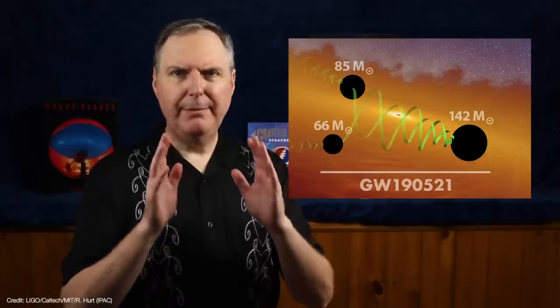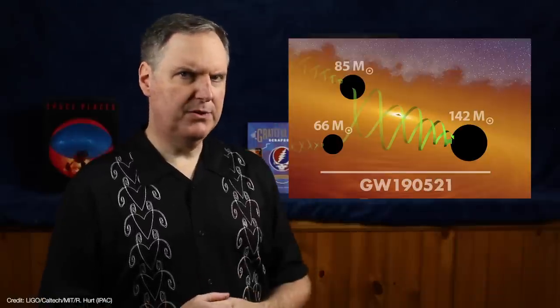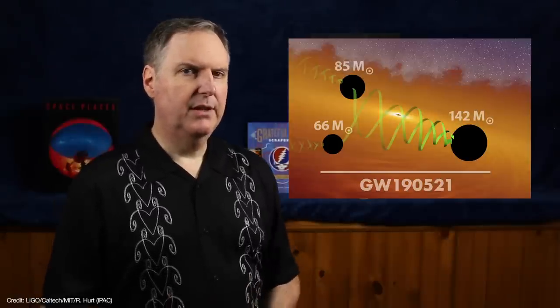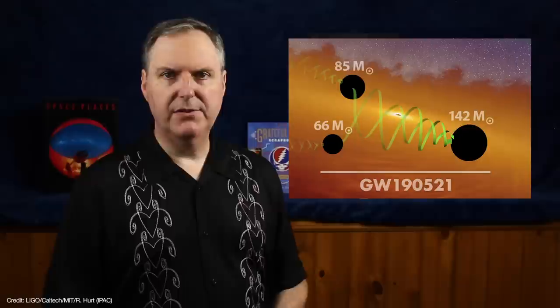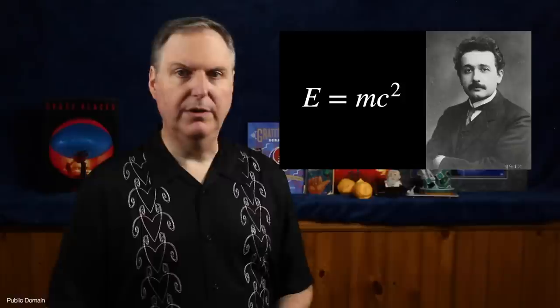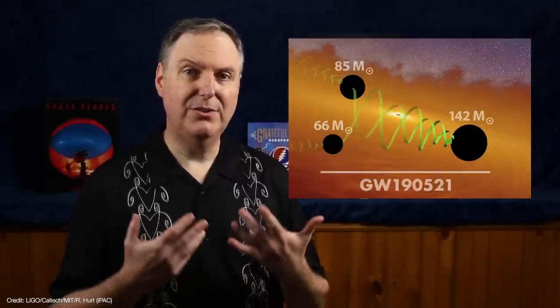Now, if I'm doing my math correctly, 85 and 66 solar masses add up to 151 solar masses. But the resulting black hole is around 142 solar masses. So where did the roughly 9 solar masses worth of black hole go? Well, Einstein showed that mass and energy are equivalent, so that means 9 solar masses was converted into pure energy during the merger.